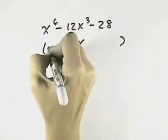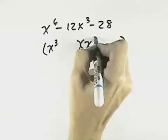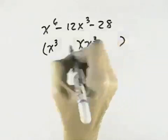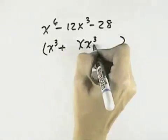For the first term, to get x to the sixth, each of our first terms would have to be an x cubed. Because the last term's negative, that means our signs are opposite. So we'll have one positive and one negative.